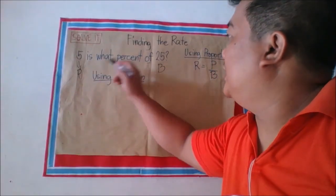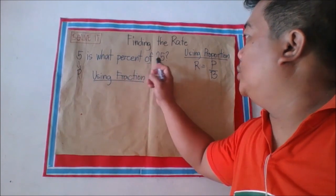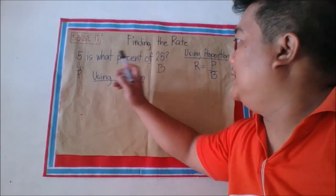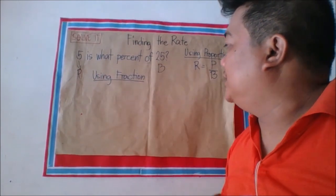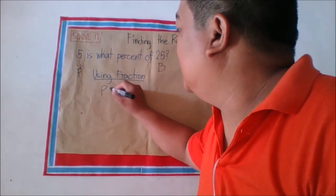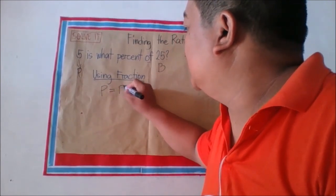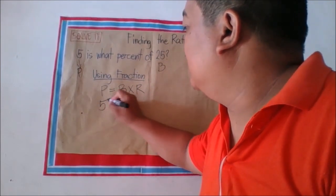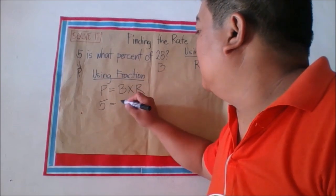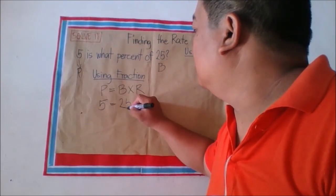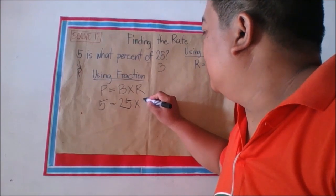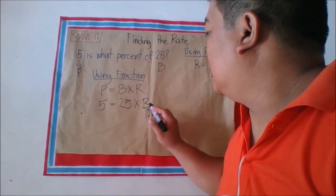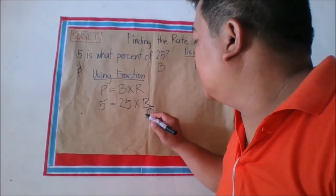Finding the rate. Example: 5 is what percent of 25? Here, 5 is the percentage because of the word 'is,' and 25 is the base because of the word 'of.' Using the percentage formula: percentage equals base times rate. So 5 equals 25 times R over 100, where R over 100 represents the rate.